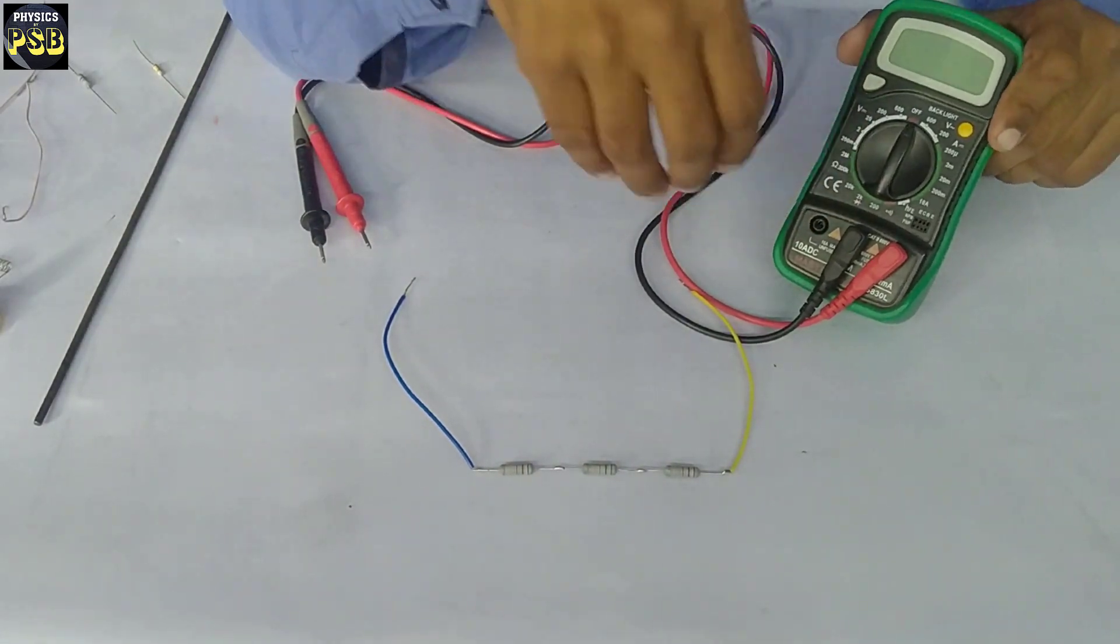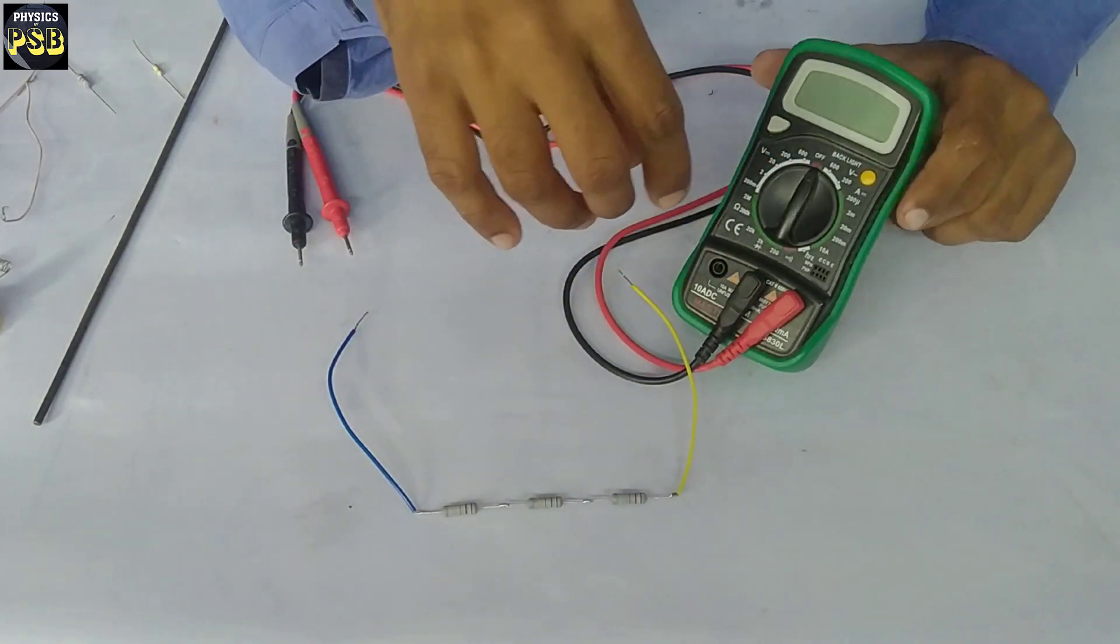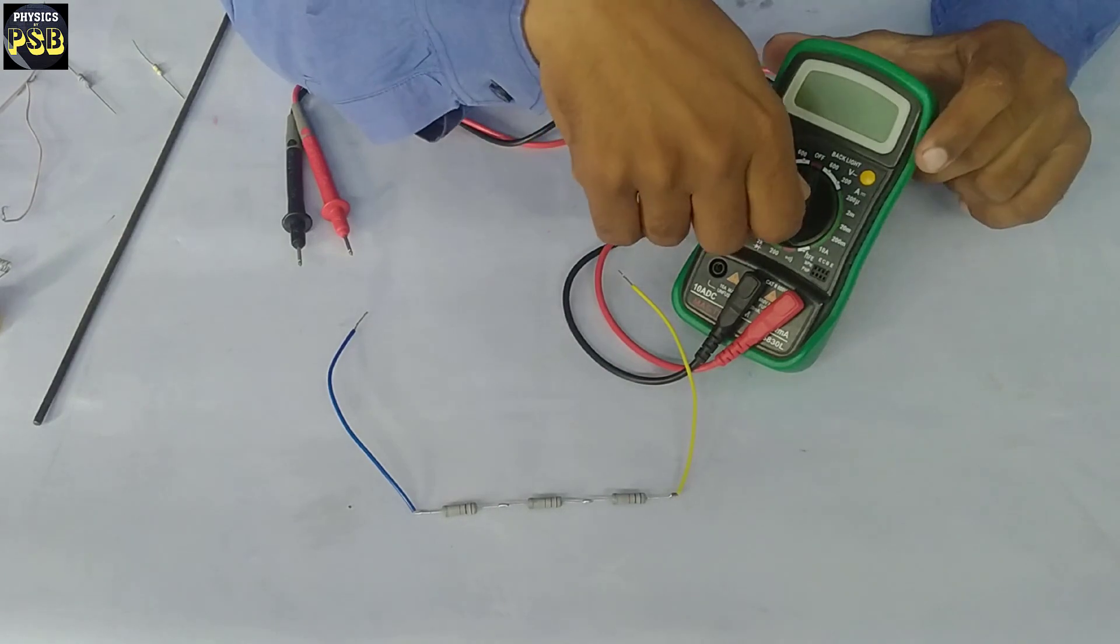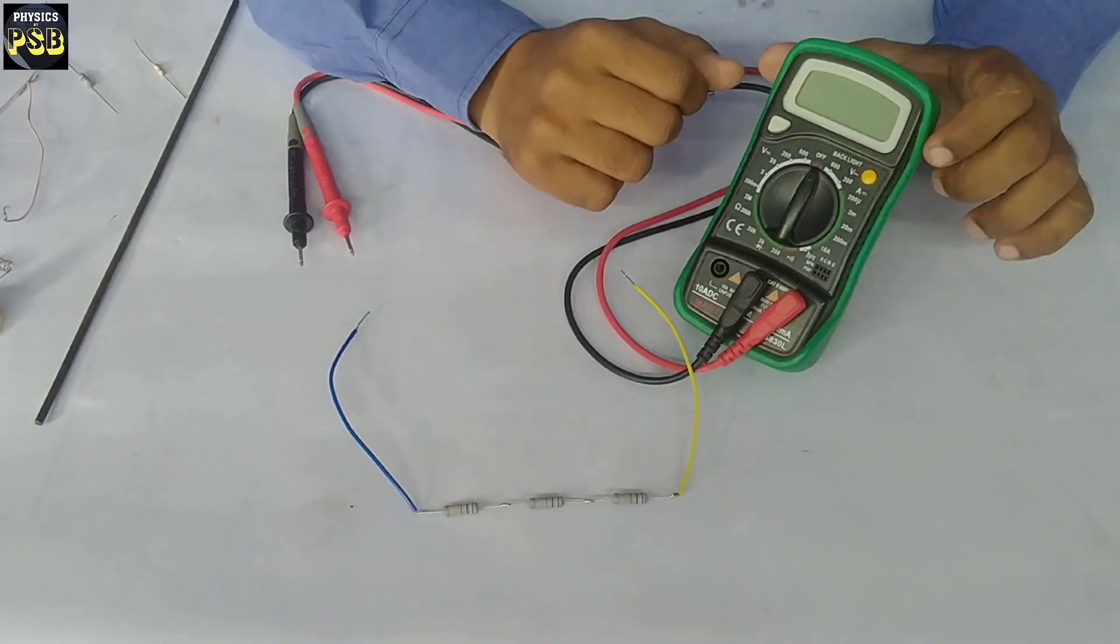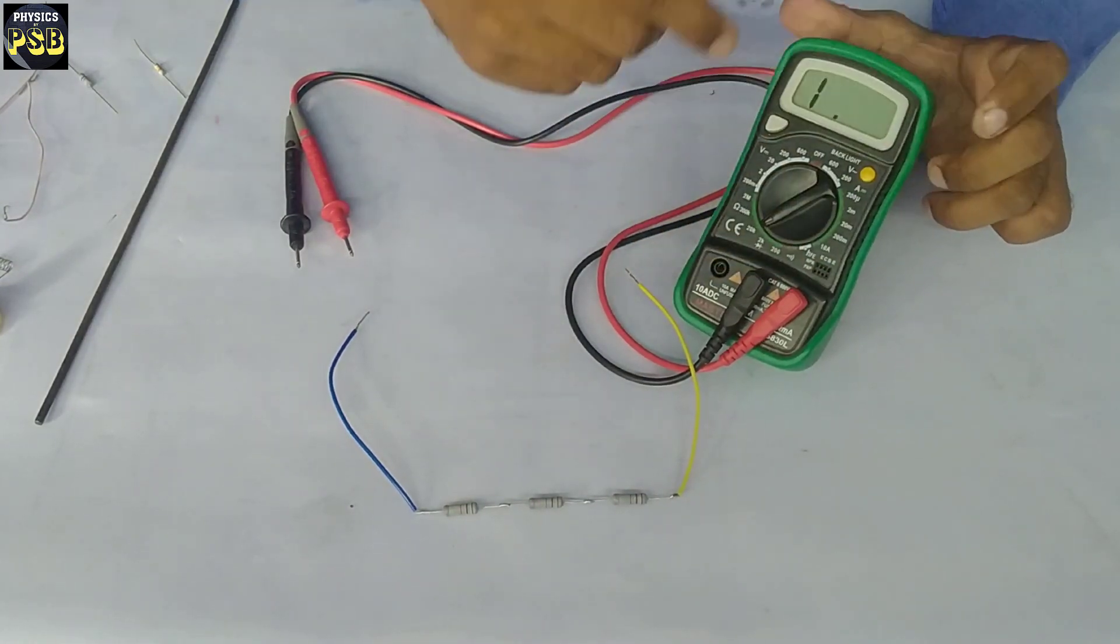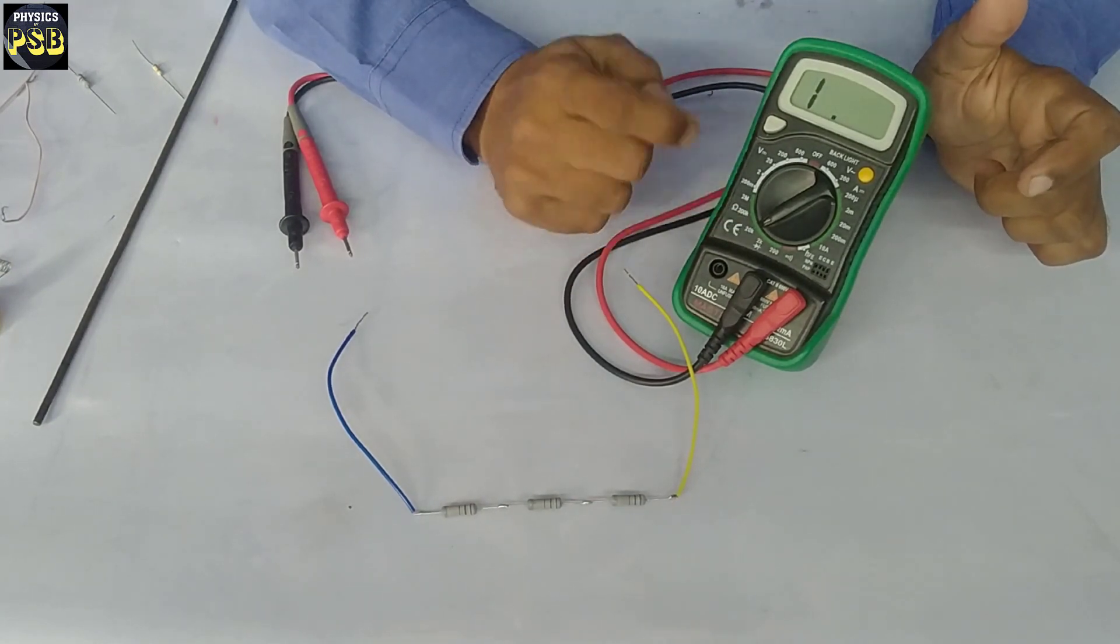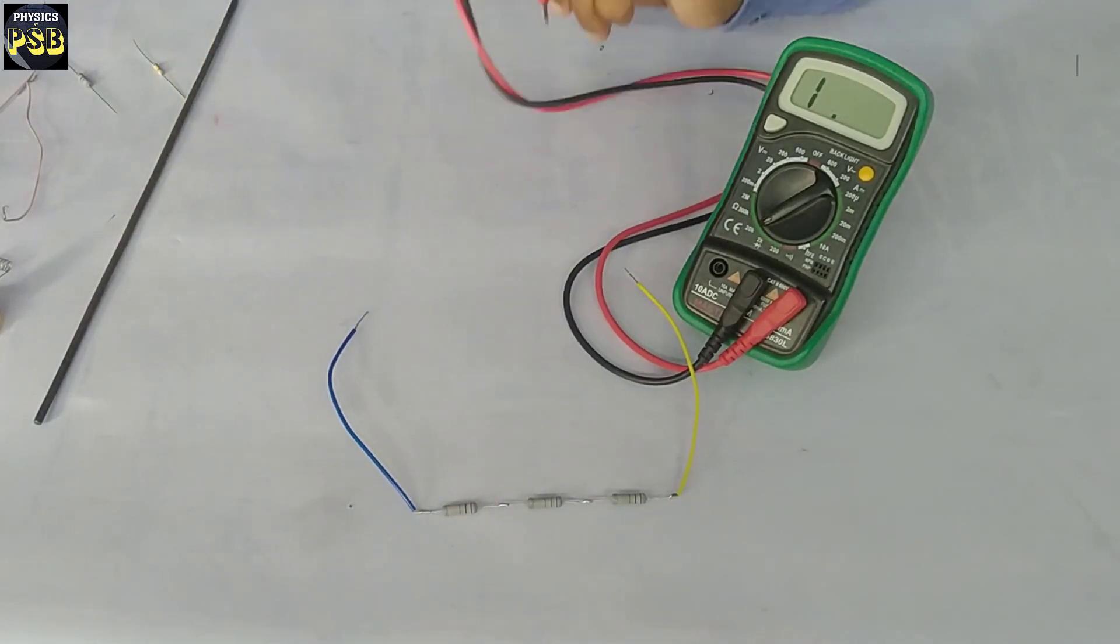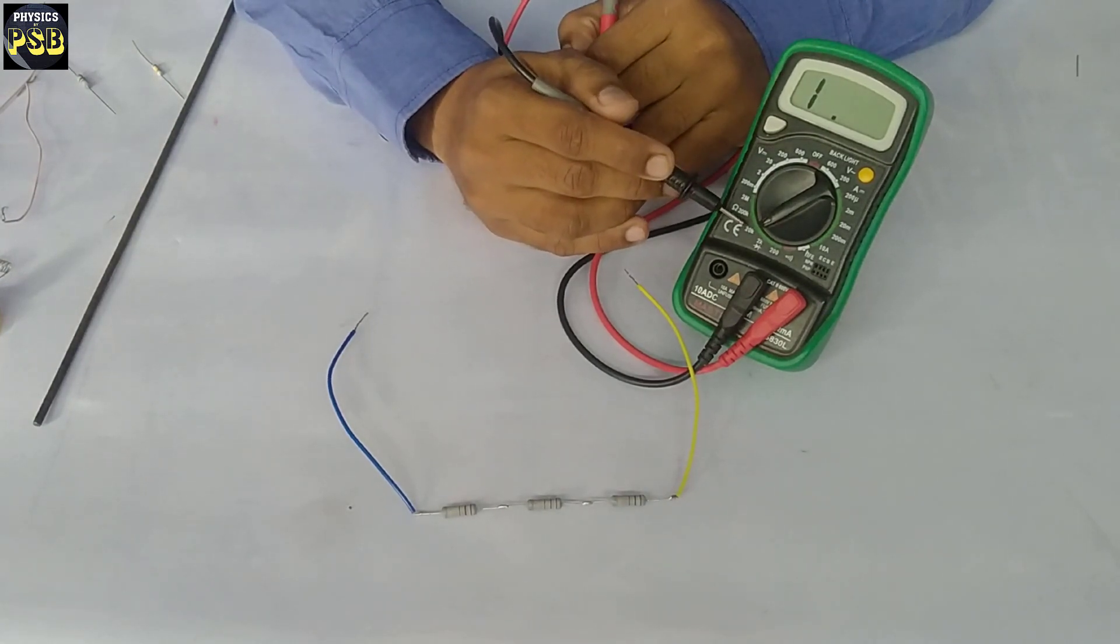First, I will set this multimeter to read the resistance. For that, I will turn this knob. Now it is capable of reading resistance up to 20 kilo-ohm.